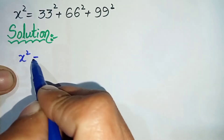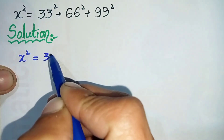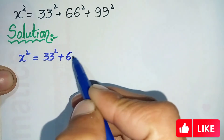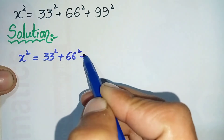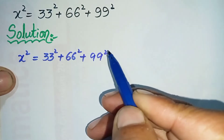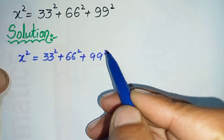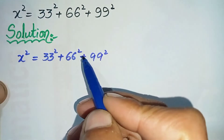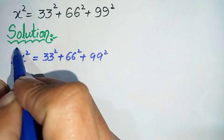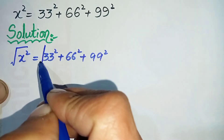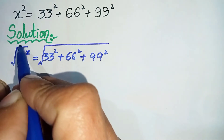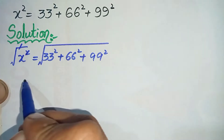The question is x squared is equal to 33 squared plus 66 squared plus 99 squared. First of all, I will take the square root on both sides to eliminate the square from the left hand side. So let us take the square root on both sides.